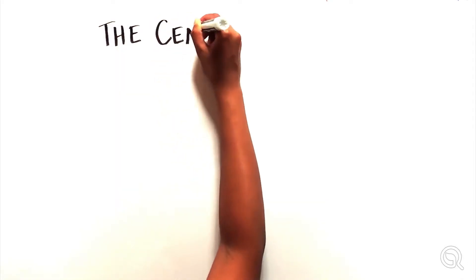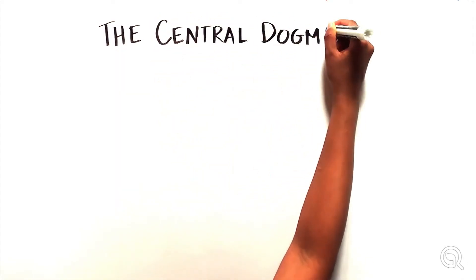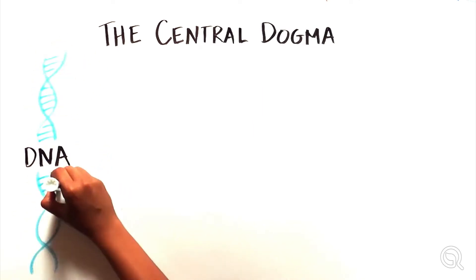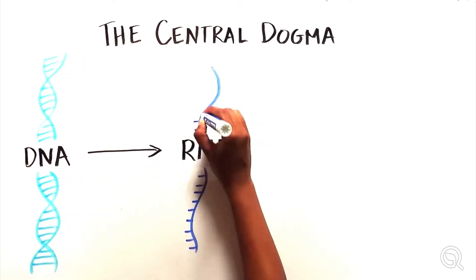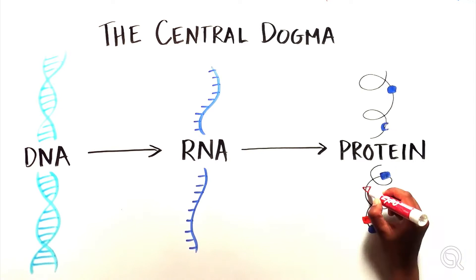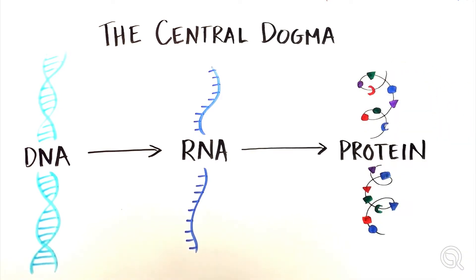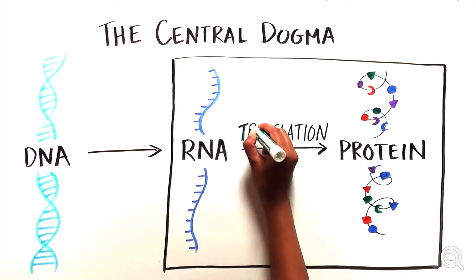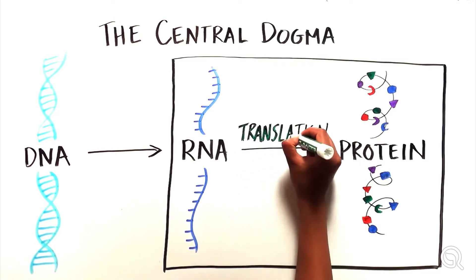The central dogma is one of biology's most fundamental principles. It states that DNA provides the instructions to make RNA, which in turn directs the production of proteins. Here we'll be focusing on the second part of this process, where RNA guides the creation of proteins, also known as translation.